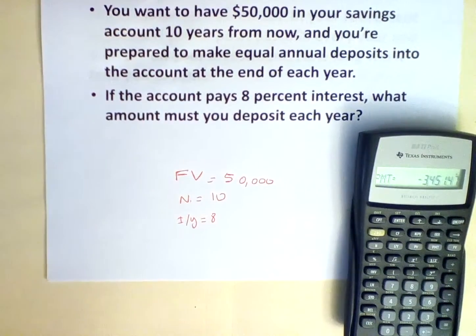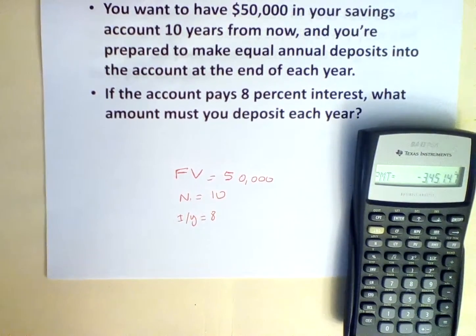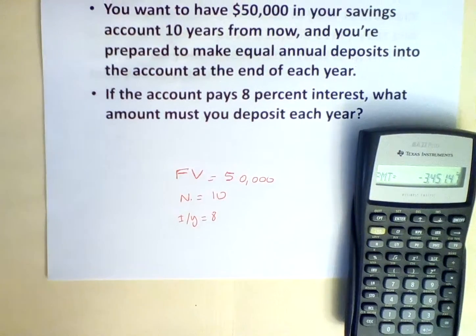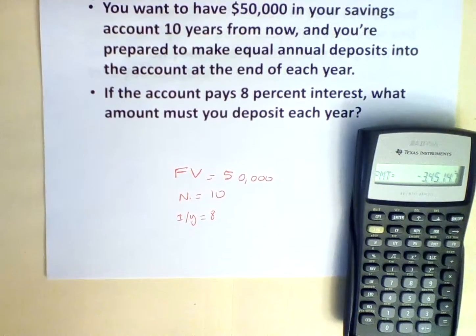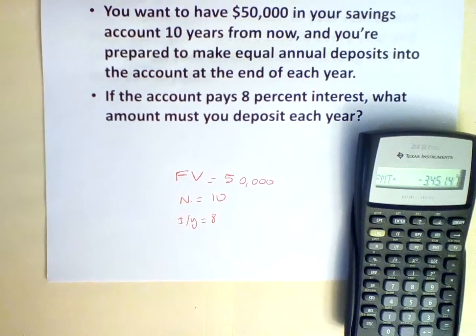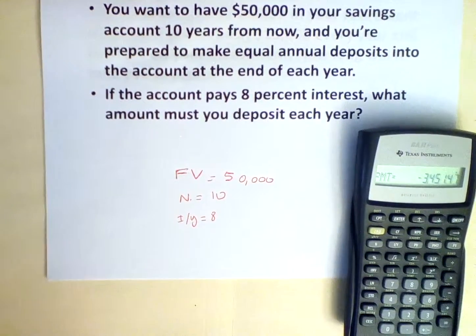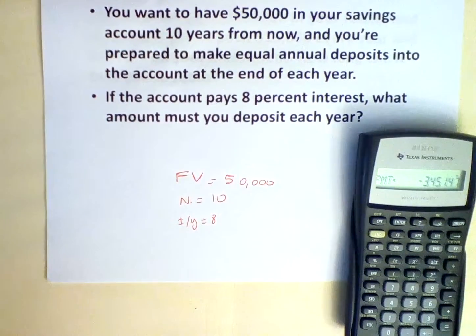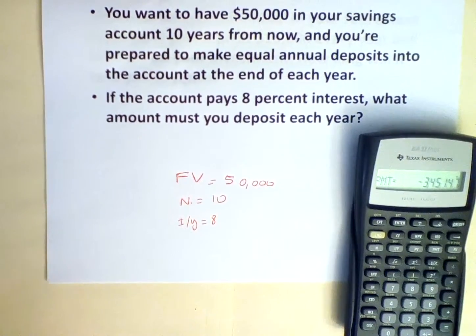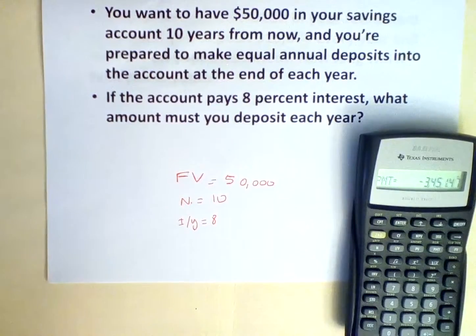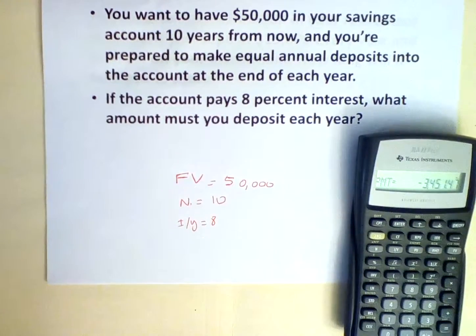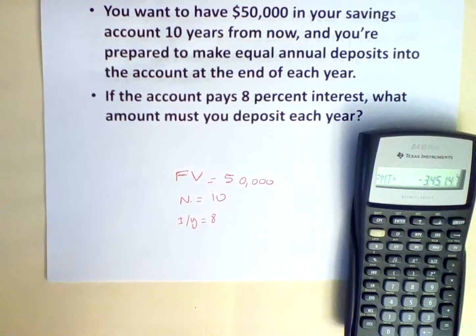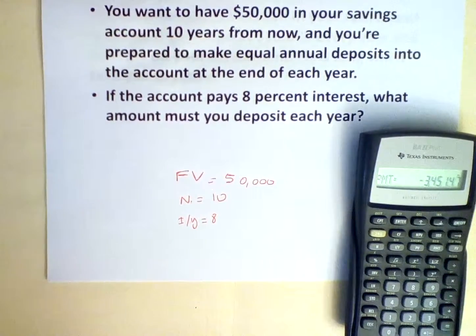And here we find that the PMT equals to $3,451.47. This means that in order to generate $50,000 in our savings account, and if we want to save for 10 years and earn an interest of 8%, we need to deposit $3,451.47 each year, so that we have $50,000 at the end of 10 years.